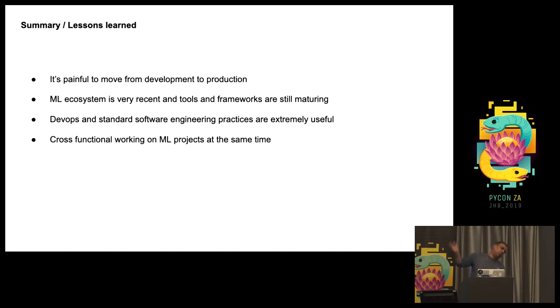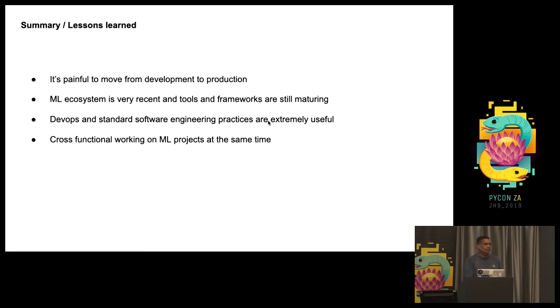In summary: it's still painful to move from development to production, but these tools are very promising. The ML ecosystem is very recent and frameworks are still maturing — many aren't even at version 1.0, so patience and pull requests are needed. DevOps and standard software engineering practices are key to getting value out of systems at scale. Having cross-functional teams — data scientists and production engineers working together — is also extremely valuable.